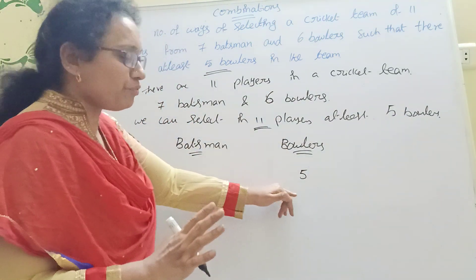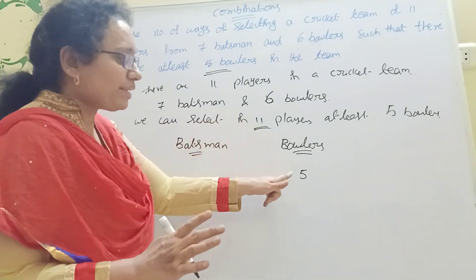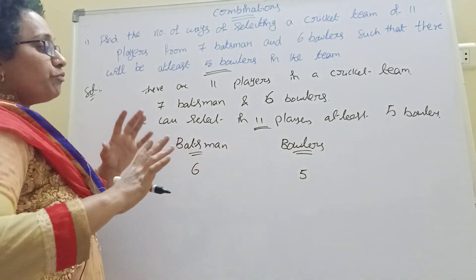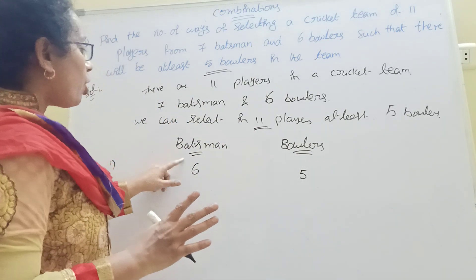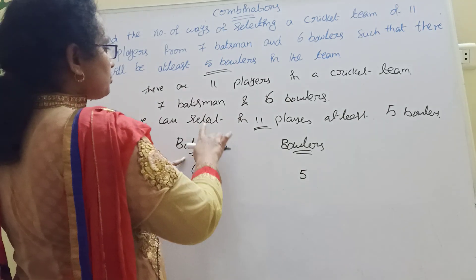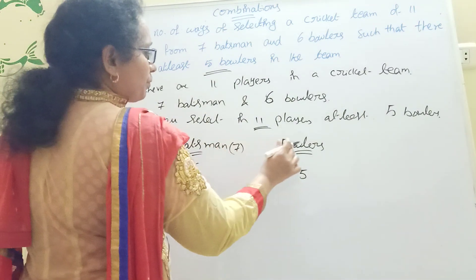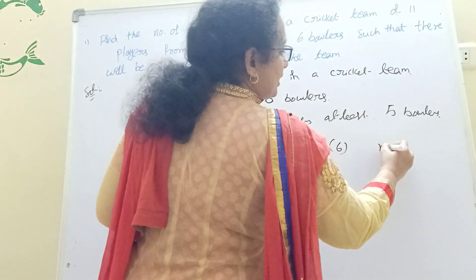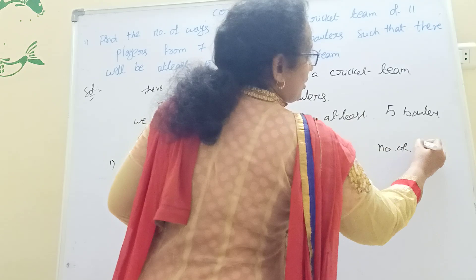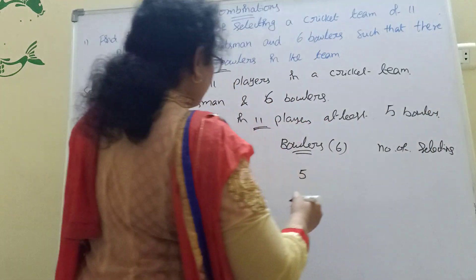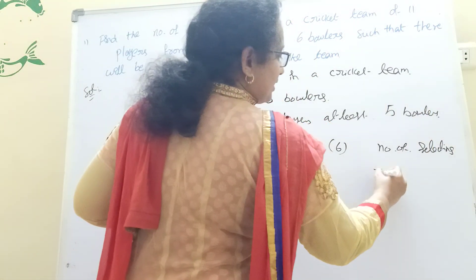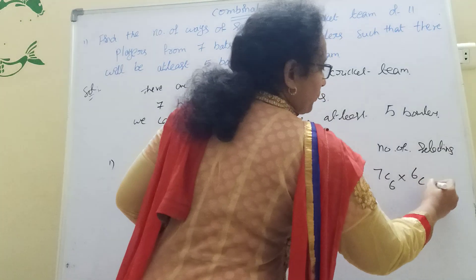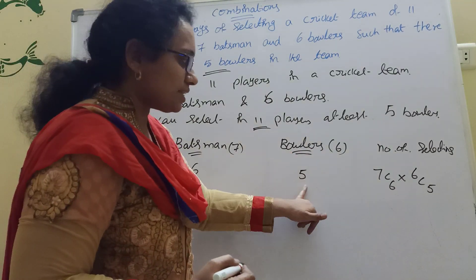So for the first case: 5 bowlers selected from 6, and 6 batsmen selected from 7. That gives us 7C6 into 6C5 for the number of ways in this case.